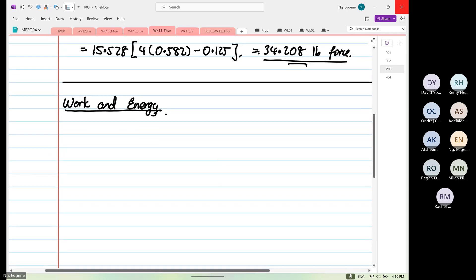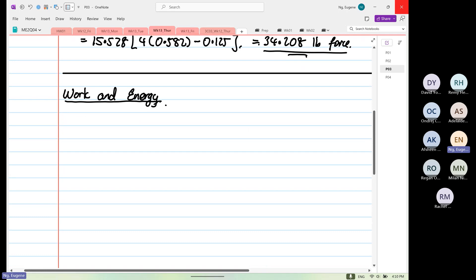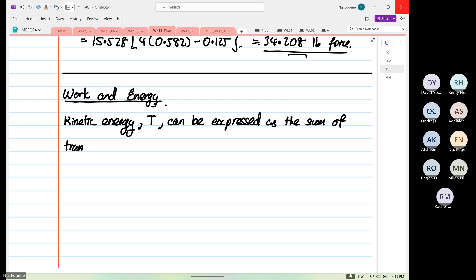So I'm going to use the same terminology used by the textbook. So kinetic energy, don't ask me why, they use the term T can be expressed as the sum of translation and rotational kinetic energies. We use the term T can be expressed for general plane motion.